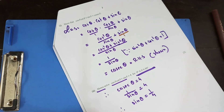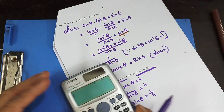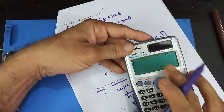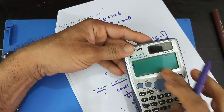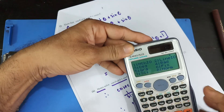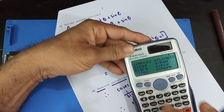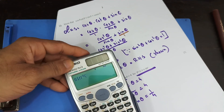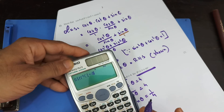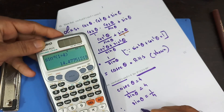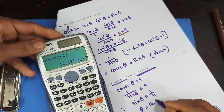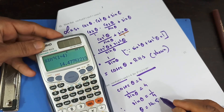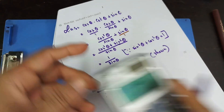So sin⁻¹(0.25) = 14.5°. Therefore θ = 14.5 degrees. That's the answer.